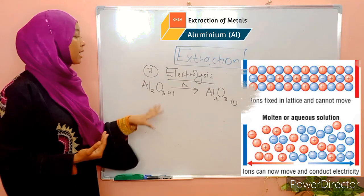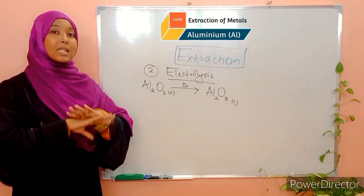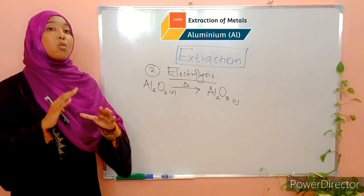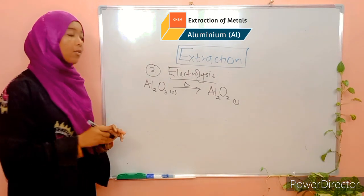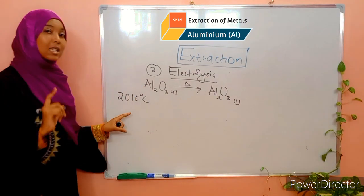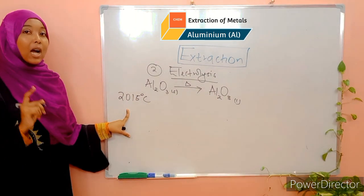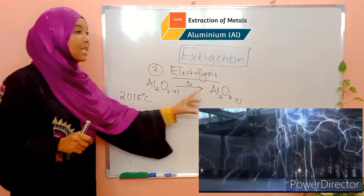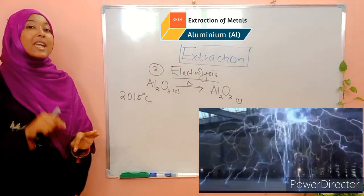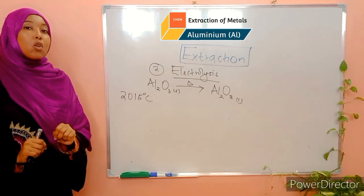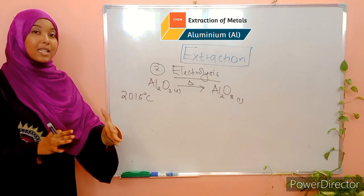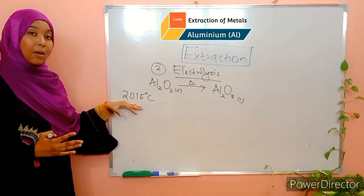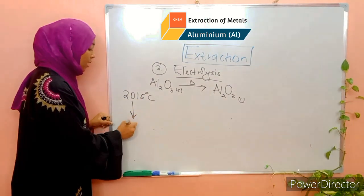What needs to happen is that the aluminium-3-oxide needs to be heated until it melts. However, aluminium-3-oxide has a very high melting point of more than 2,000 degrees Celsius — specifically 2,015 degrees Celsius. You can imagine the amount of electricity required to melt huge quantities of aluminium-3-oxide and ensure they remain molten. So in order to save on costs, a compound called sodium cryolite is added, which simply lowers the melting point of aluminium oxide from around 2,000 degrees Celsius to 800 degrees Celsius.